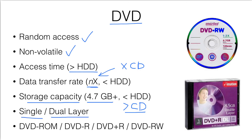With a DVD, it can have different forms. We have a DVD read-only memory, DVD minus recordable, DVD plus recordable, and DVD rewritable. For DVD recordable, sometimes we don't need to care about whether this is minus or plus — we simply regard them as DVD recordable.